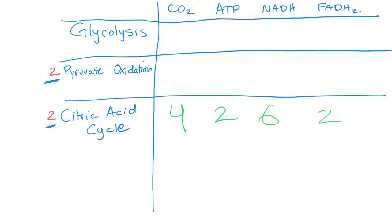How many carbon dioxides in pyruvate oxidation? Two. How many ATPs? None. How many NADHs? Two. How many FADH2s? Zero. All right, we don't have any FADH2s in glycolysis either. Do we have any carbon dioxides? No. And this one we don't multiply by two because we started with just one glucose. So how many ATPs? Two. And how many NADHs? Two.